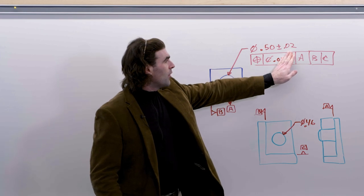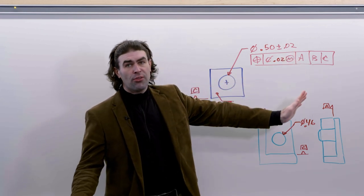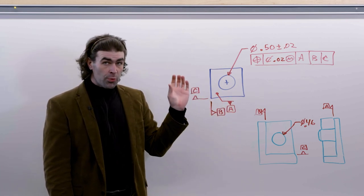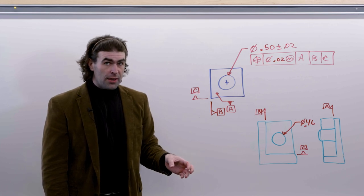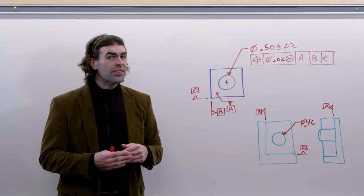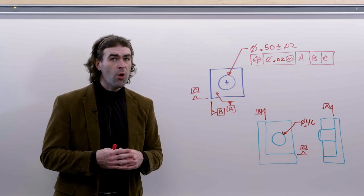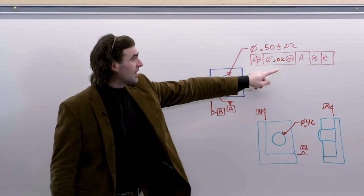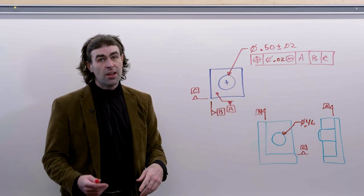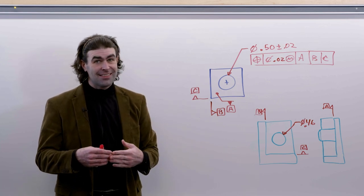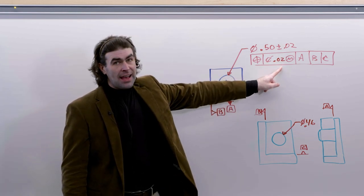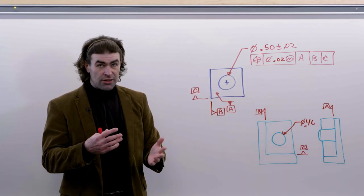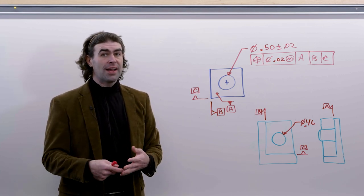What makes it different from regardless of feature size is just in how you sort the data. So if there's no MMC symbol here, we only have 20 thousandths - you're done. If we do have the MMC symbol, now we need to know what size the gauge pin is. If the gauge pin is larger than the MMC of the hole, so bigger than 0.48, we're going to get additional tolerance here. So if the pin comes in at 0.49, that's ten thousandths bigger - we get ten thousandths more tolerance for our position.